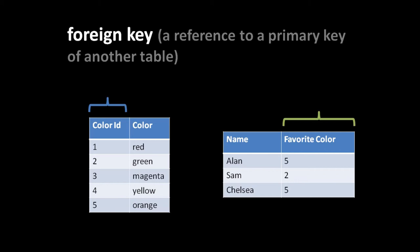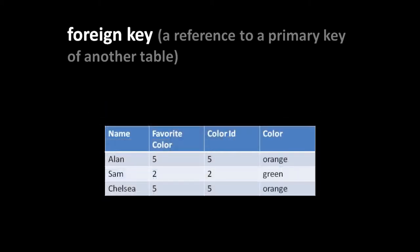Primary keys and foreign keys are really what form the relationships between tables. The most common use of joins is to take two tables where one has a foreign key pointing to the primary key of the other, cross-join them, then filter for rows where the foreign key value of one matches the primary key value of the other. This lets you find out, say, what the actual name of Alan's favorite color is - since querying the person table alone only gives you color IDs, not color names.